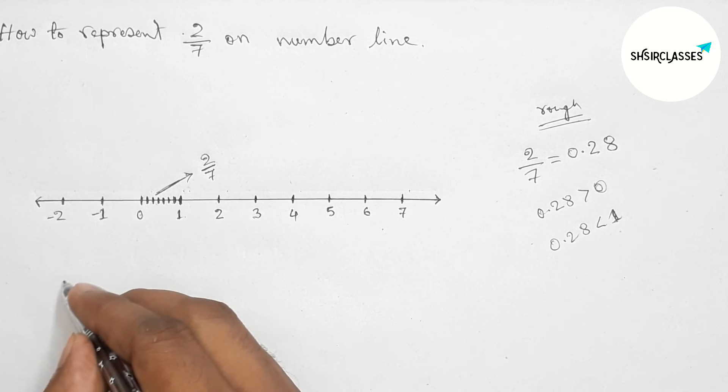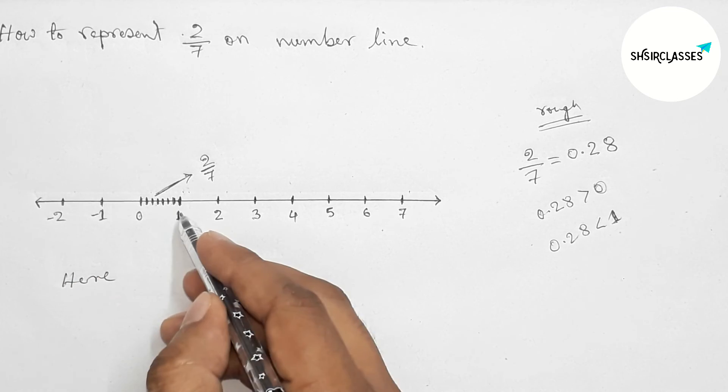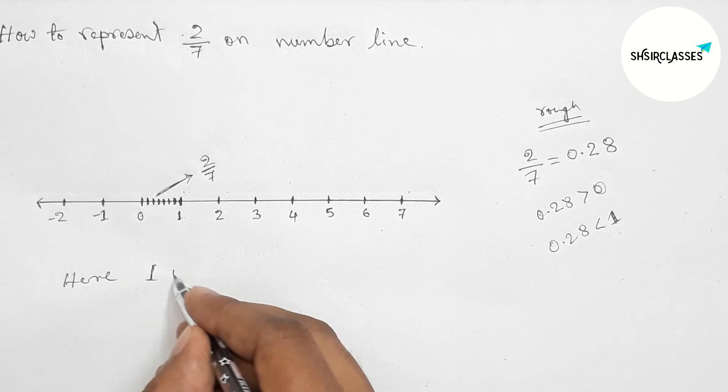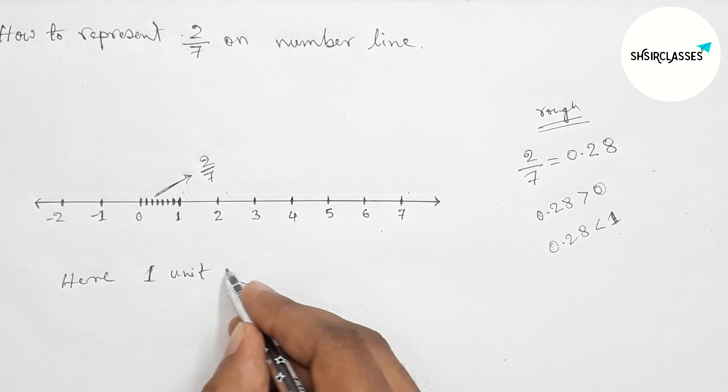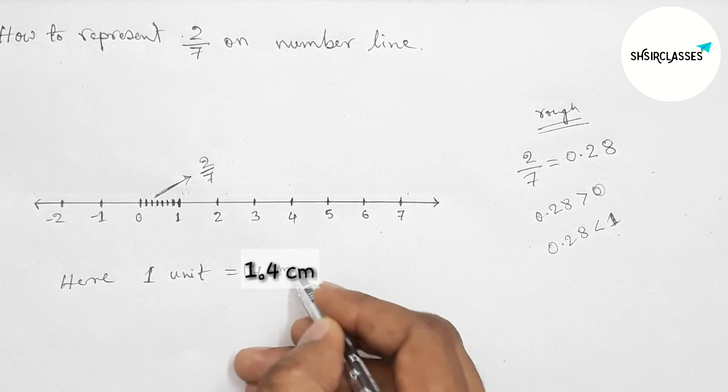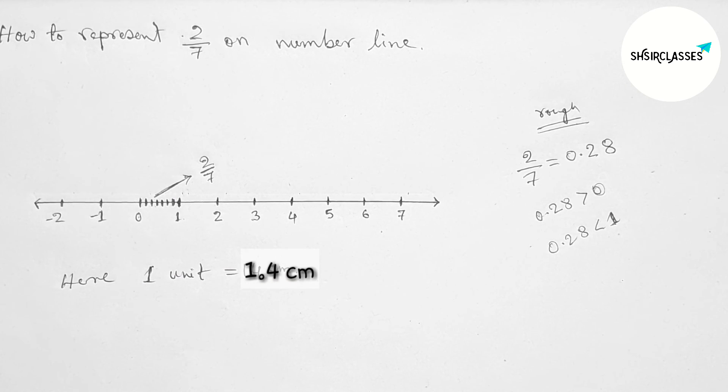And here the length between any two numbers, one unit, equals 1.4 centimeter. By this way you can represent. That's all, thanks for watching. Please share it with your friends.